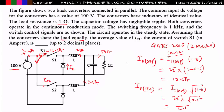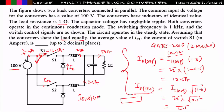Once you find the individual inductor current, you can proceed like a normal buck converter. Every formula remains valid — you can find switch current, diode current, RMS values. If a future GATE question asks for the RMS value of switch current: iS_rms = √D × iL_avg. All formulas for average and RMS values of switch current and diode current are valid. Just find the individual inductor current first, then proceed right to left to find every parameter.